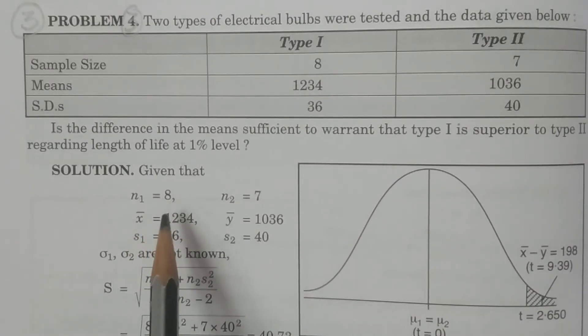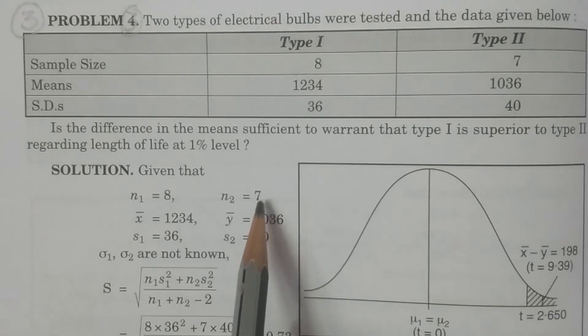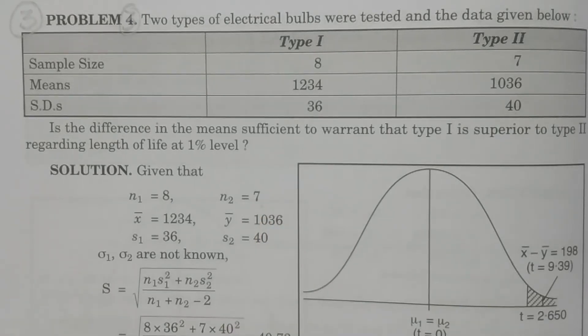So it is obvious: n1 is equal to 8, n2 is equal to 7, which are less than 30, therefore which are small samples. That is, it is a problem of small sample.